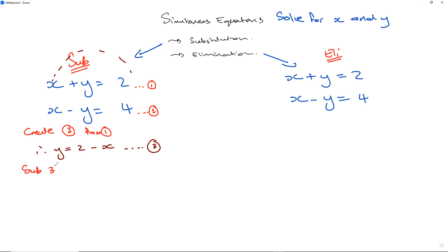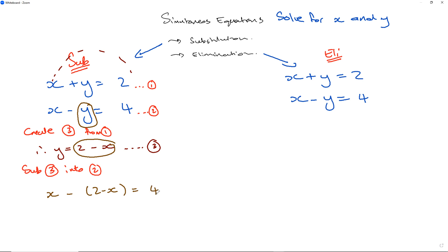Next, substitute equation 3 into the equation I haven't used yet — equation 2. Because I created equation 3 from equation 1, I substitute into equation 2. Replacing y with 2 minus x in equation 2 gives x minus (2 minus x) equals 4, which simplifies to x plus x minus 2 equals 4, so 2x equals 6.